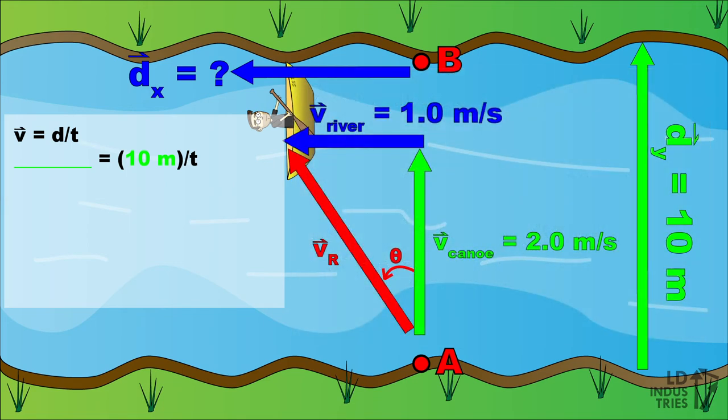This means that if you substitute in a Y displacement, like 10 meters, you have to also sub in a Y velocity, in this case, 2 meters per second. That will allow us to calculate a time of 5 seconds, which is how long the canoe is in the water for.